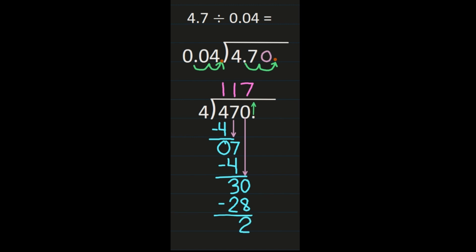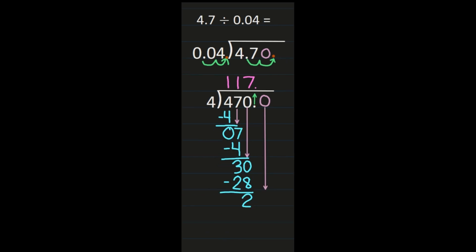Because we're working with decimals, we don't put remainder 2 — we need to keep working the division steps. I'm going to bring the decimal point straight up so it's in the right place in my quotient, placing it behind the 7. Then I add a 0 behind the decimal in the dividend and bring that 0 down: 20 divided by 4 is 5. Make sure all your digits are in the right place so your decimal ends up correct. 5 times 4 is 20, and 20 minus 20 is 0. So my quotient is 117 and 5 tenths.